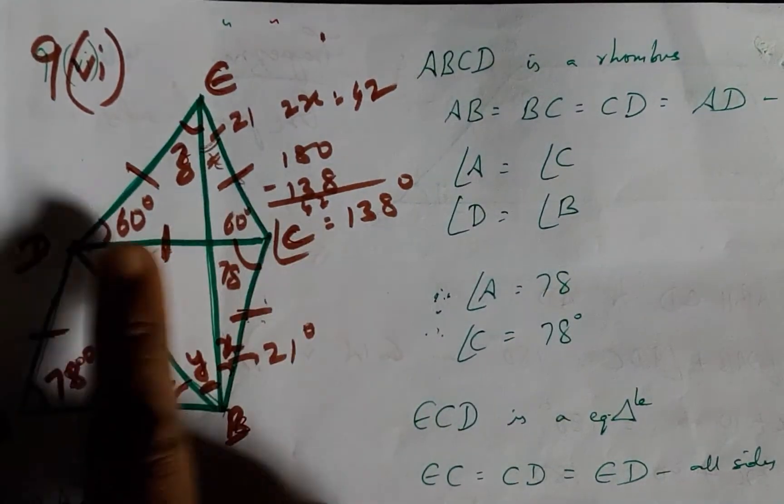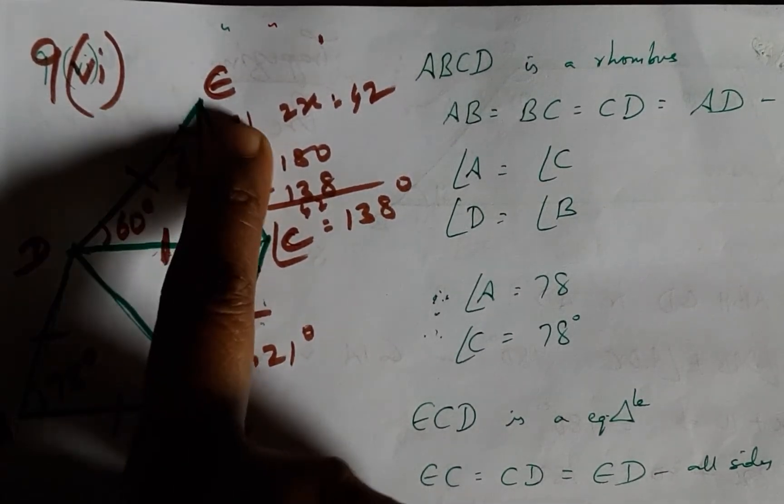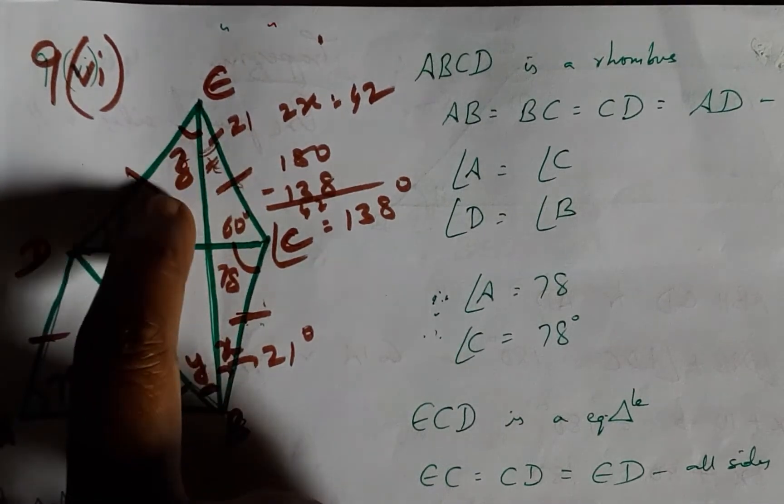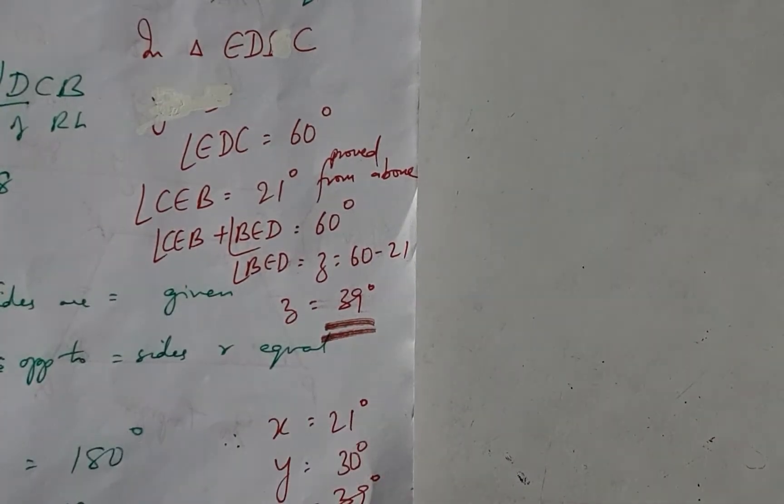Now, coming to triangle EDC, we have 60 and 60 each, and this sum is 60, but one of them is 21. Therefore, 60 minus 21 will be the value of Z, and Z will be 39 degrees.